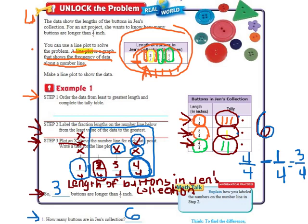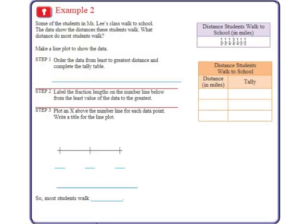Let's turn the page over to 462 and do another example for practice. Okay, page 462, example 2 says, Some of the students in Mrs. Lee's class walked to school. The data show the distances these students walk. What distance do most of the students walk? So we're going to make a line plot to show the data. So first step, order the data from least to greatest distance and complete the tally table.